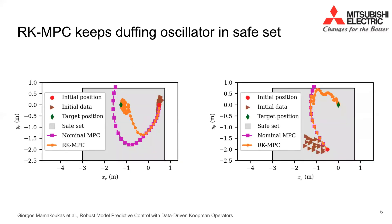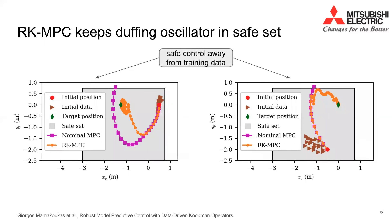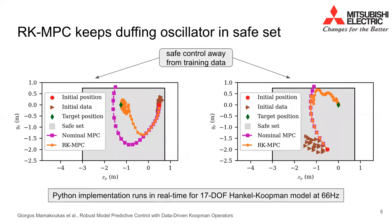We demonstrate the efficacy of our proposed algorithm by using the dynamics of a Duffing oscillator and showing that the proposed method, called RK-MPC, starting from two different initial conditions, safely converges to a target that lies far from the training data. On the other hand, nominal MPC is unable to satisfy the state constraints and exits the safe set. The two plots show the performance for the two different initial conditions, and this simulation is able to run in real-time using our Python implementation at 66 Hz.